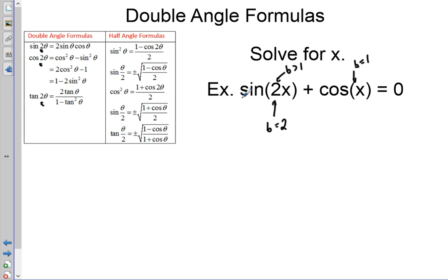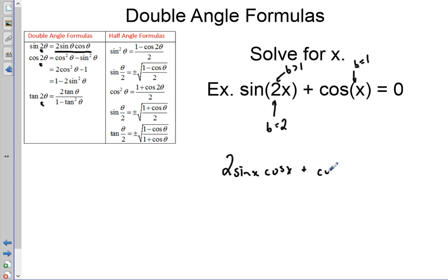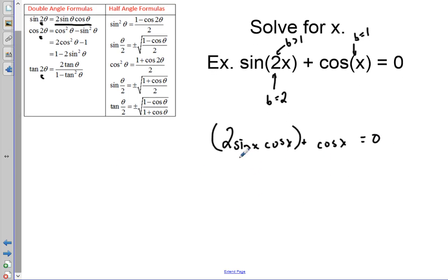Since we have sine of 2x, we recognize that's a double angle formula. Looking at our formula sheet — you might want to memorize this or keep it handy; in my class I usually let students use a little cheat sheet — sine of 2x becomes two sine x cosine x. So we replace sine of 2x with two sine x cosine x, then plus cosine of x equals zero.